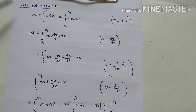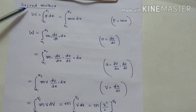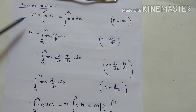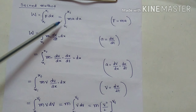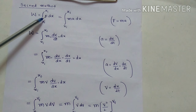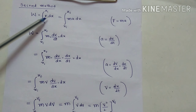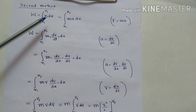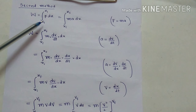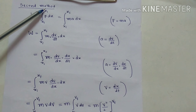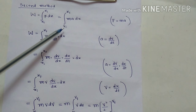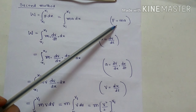This is the second method to prove the work-kinetic energy theorem. W = F·s, so W = integral of F dx, where F is the force applied and dx is a small displacement, integrated from initial position xi to final position xf. From Newton's second law F = ma, so we substitute ma into dx.